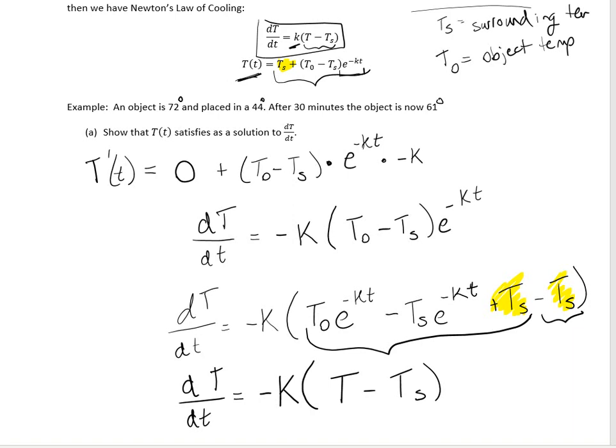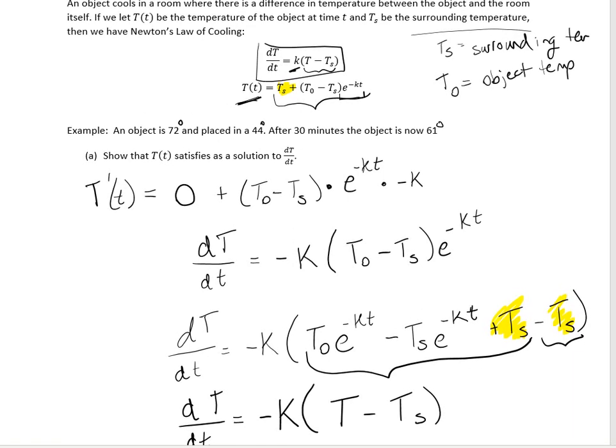One thing to point out: in the formula k is positive, but in the derivative I wrote it as negative k. The reason is that typically when we talk about Newton's Law of Cooling, the object is cooling down and losing kinetic energy. You can also use it for things heating up, so it's technically more correct to just leave k as is, but in this context I like to think of it as negative.